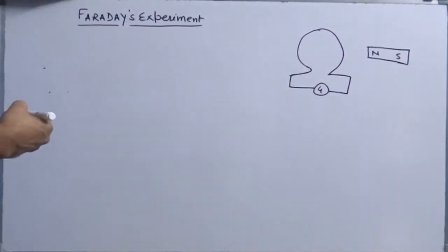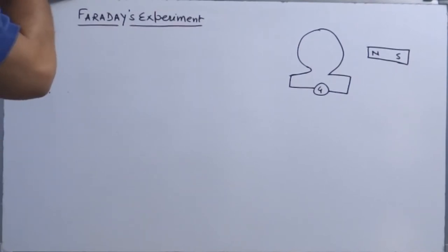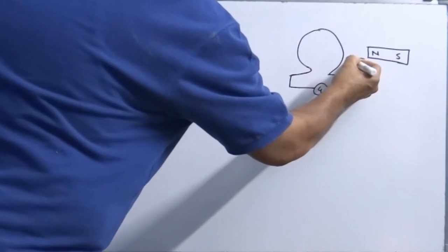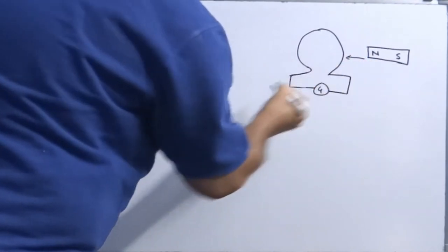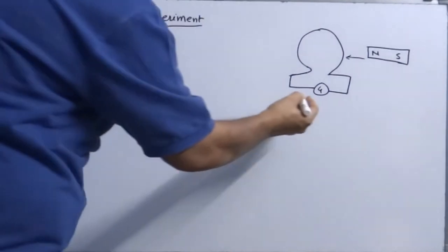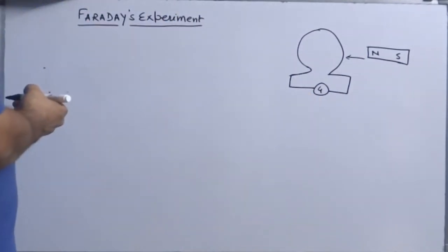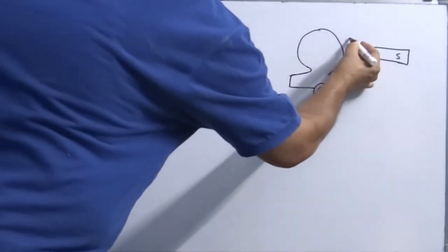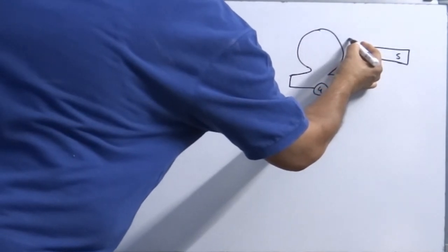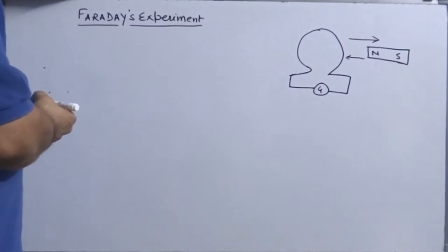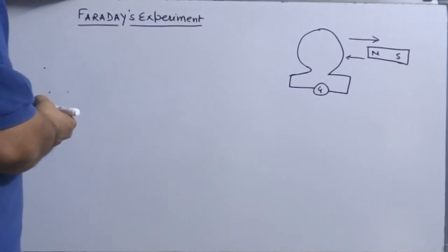What he observed in his experiment — listen carefully: when the North Pole of the bar magnet is moved rapidly towards the coil, the galvanometer shows deflection. When the North Pole of the magnet is moved away from the coil, the galvanometer shows deflection again.